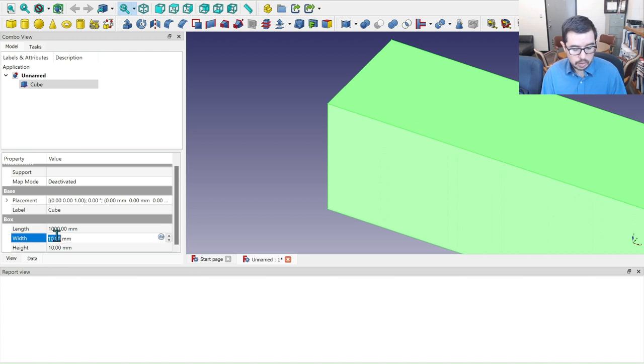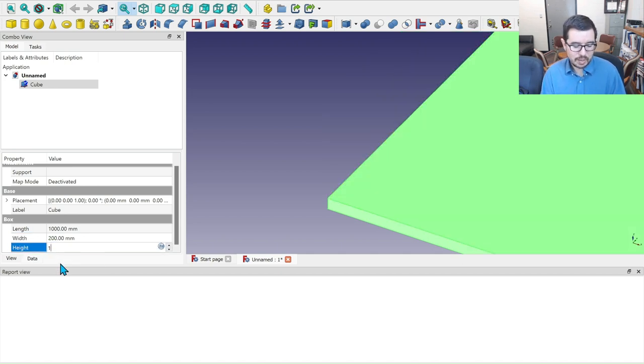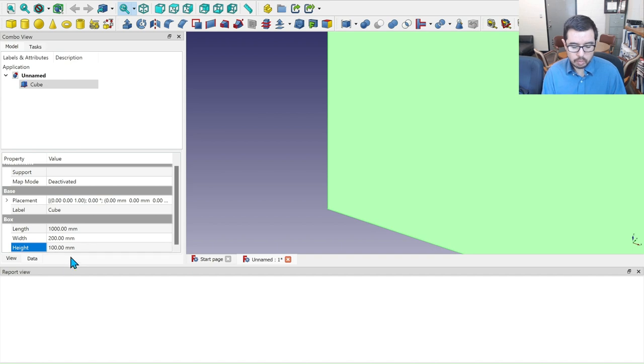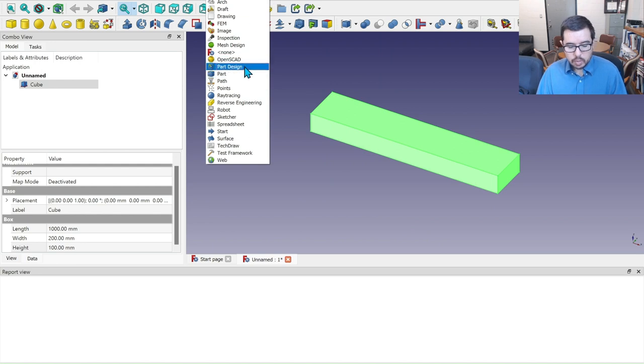And now we have the ability to put in the length 1000 millimeters, the width 200 millimeters, and 100 millimeters or 0.1 meter for the height. Come over here, you can click on this object right here that says zoom to fit. And so now we see it like that.